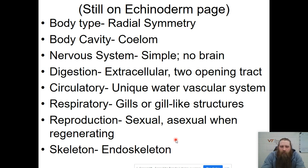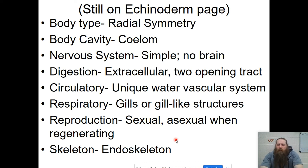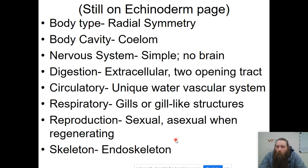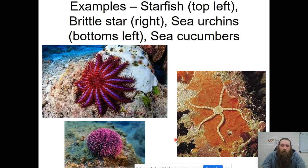Echinoderms have radial symmetry and they are coelomates. Their nervous system is pretty simple though — there is no brain. Starfish do have a neural ring that goes around the middle of the starfish with a branch going into each arm, but there's no really complicated brain. They do have two-opening digestive tracts. Their circulatory system is pretty unique — it is based on a water vascular system, so water in tubes. They use gills or gill-like structures to breathe. They undergo sexual reproduction normally but asexual reproduction if they are regenerating, and they all have endoskeletons.